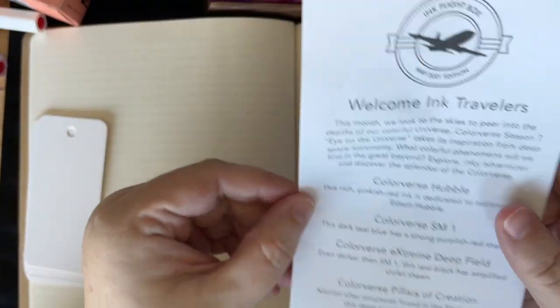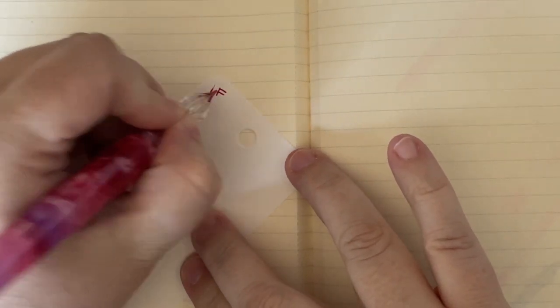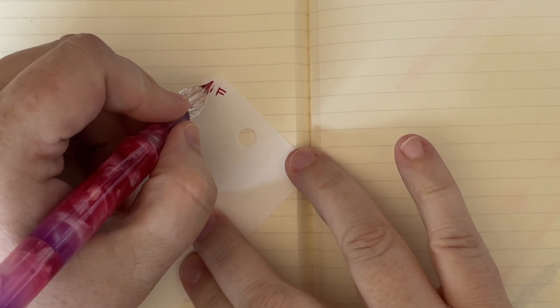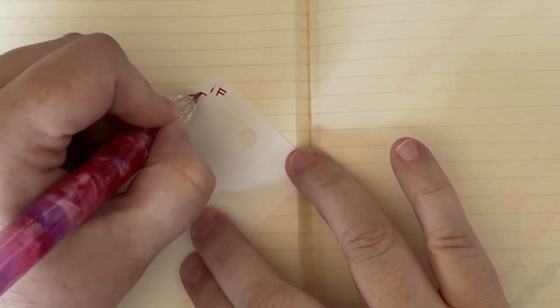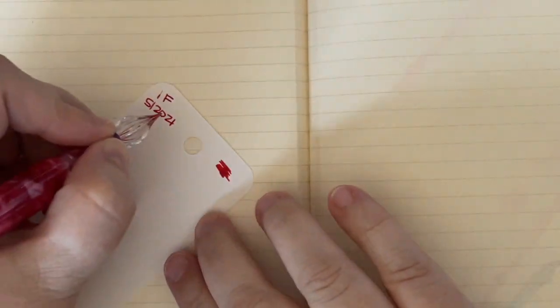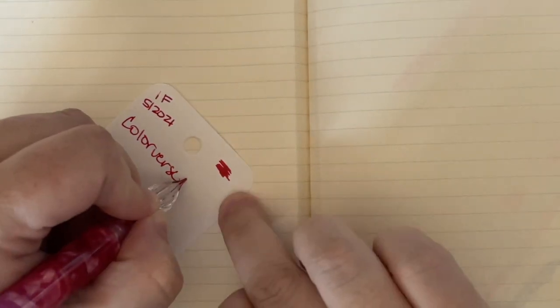So we're gonna start with, we're gonna go in order of the sheet, which starts with Colorverse Hubble, which is this beautiful red color. And so we're going to go ahead and swatch this. So this little hand, I mentioned this in the other half of the thing. This little thing is super handy, especially for ink flights. Because I can just have all the ink sitting right there. This is Ink Flight 52 or 53? I don't know. 2021. Colorverse Hubble.